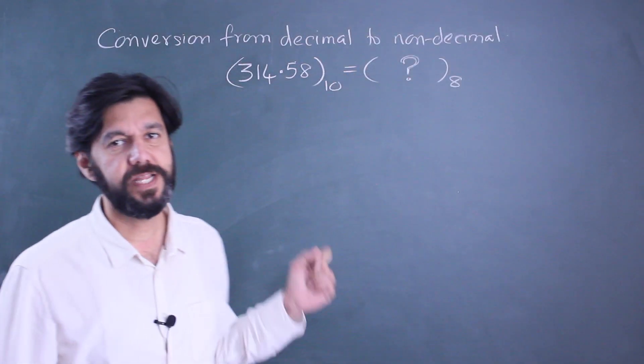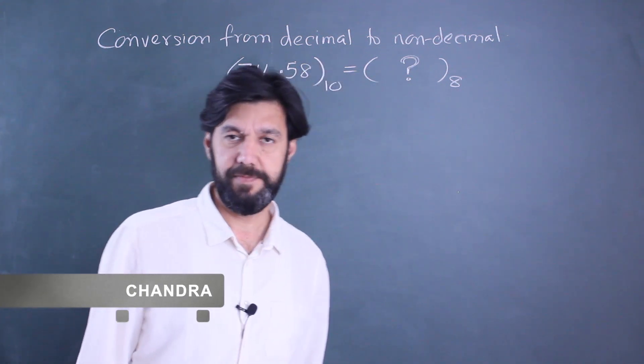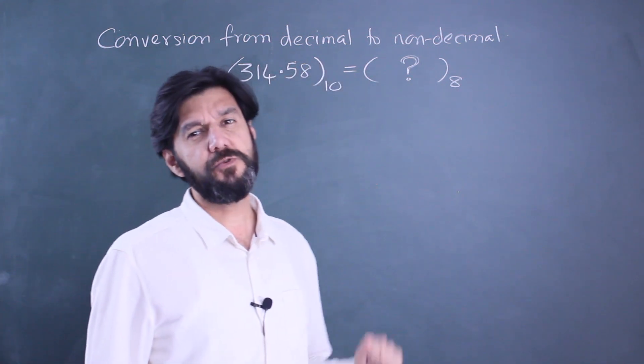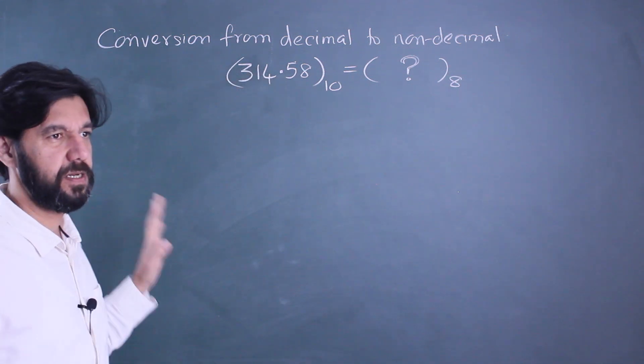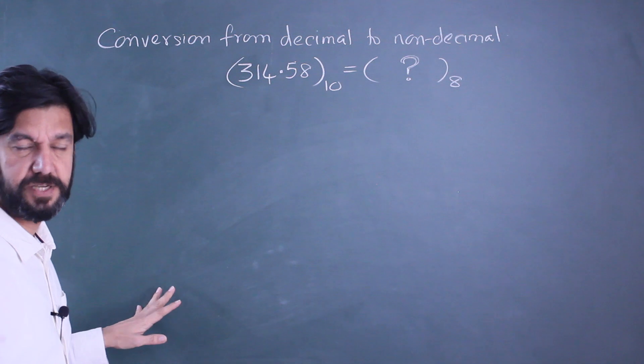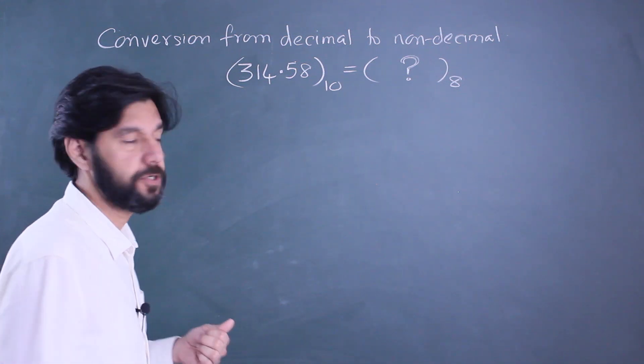Next we will look at the other way round, that is converting a decimal number to a non-decimal. Now the textbook way is a little calculation intensive. We will see a logical way also, but first let's see the standard method.